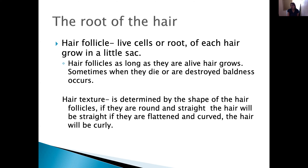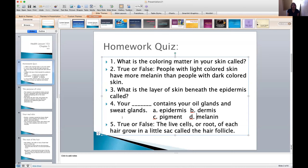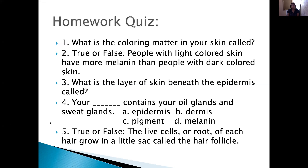I actually found this very interesting — I didn't know this. The color of your hair is determined by a pigment that is deposited in new hair cells before they grow out of a follicle. That is how the color of your hair is determined.